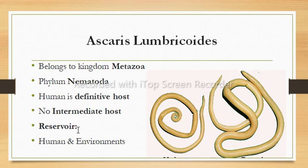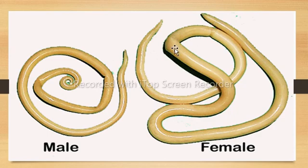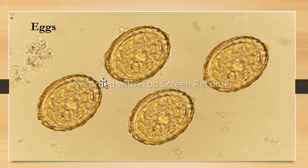Ascaris eggs lie in soil or in an infected human, making it a reservoir. Regarding morphology of adult worms: the male worm is 15–30 cm long and their posterior end is curved, while the female worm is about 20–50 cm long and their posterior end is straight. Ascaris lumbricoides are the largest roundworms. The eggs of Ascaris lumbricoides are about 50–70 micrometers, as seen in a wet mount preparation when examining stool under a microscope.